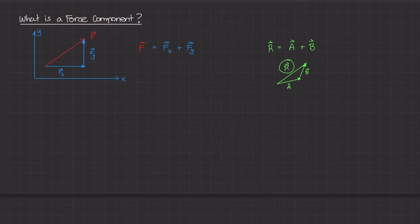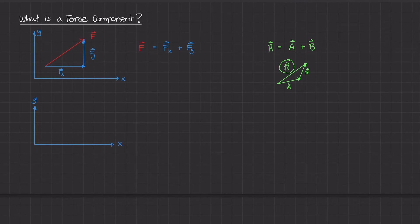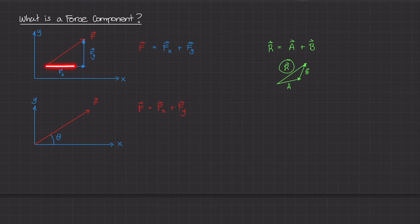Let's get more specific. If I redrew this reference frame with the y-axis vertical and the x-axis horizontal, I could take that same force vector F starting at the origin, making some angle theta with the x-axis. Just as before, F equals Fx plus Fy — these two force vector components add together to give force vector F acting at angle theta from the horizontal axis. These are the components of F.